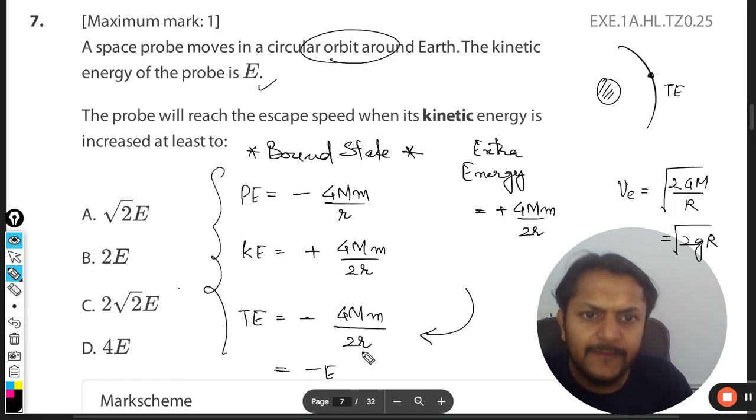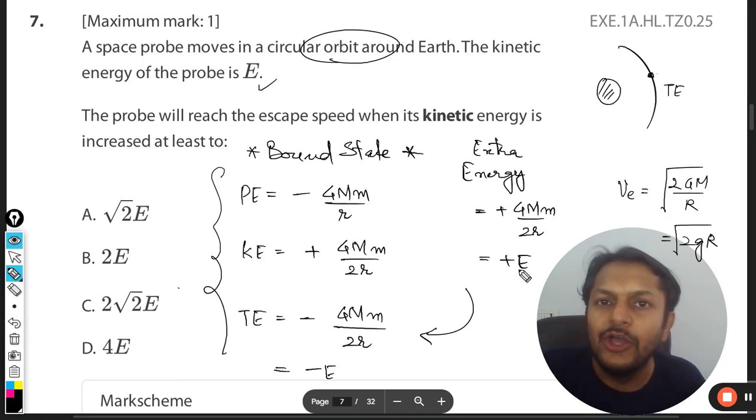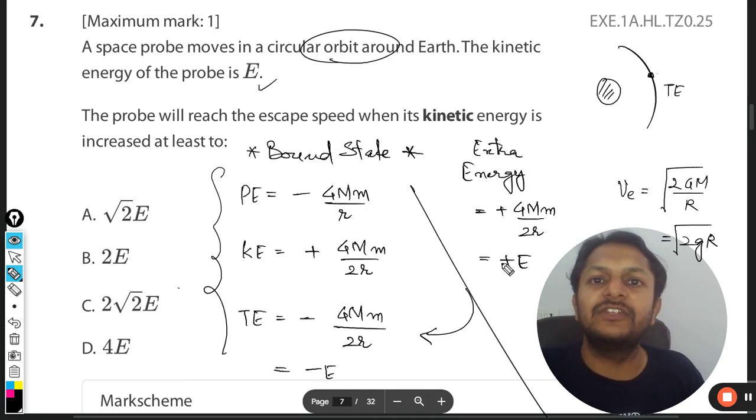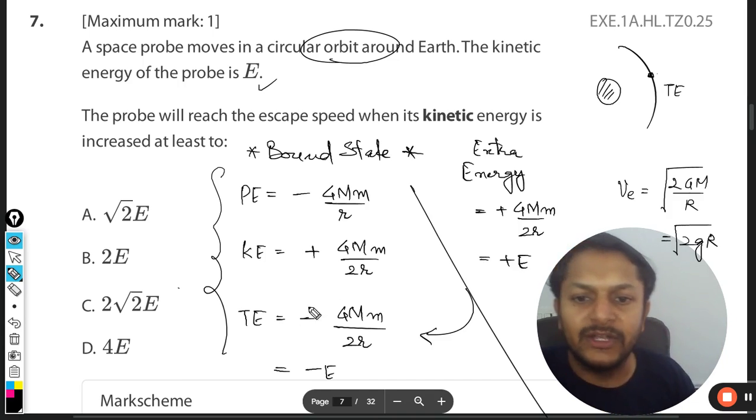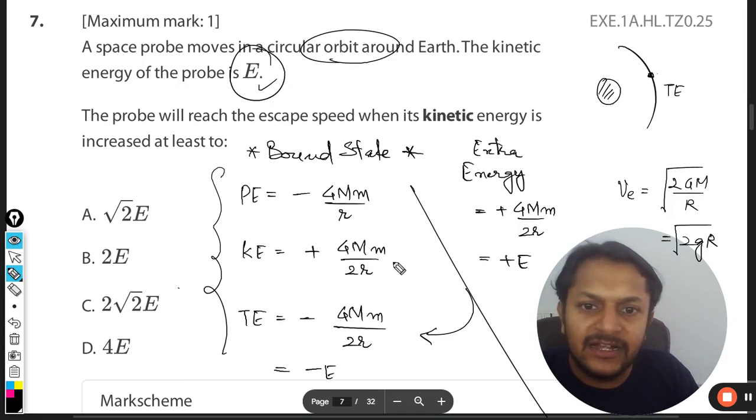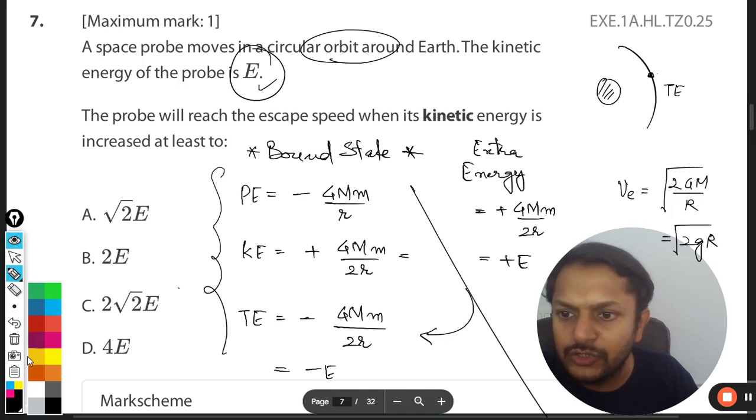Negative E, so you are giving positive E, so the total energy becomes zero. And that is the condition for the escape speed. Clear? So from this discussion, what we have learned? We learned that for escape speed, E amount of energy must be given back to it. Now the magnitude of total energy is equal to the magnitude of kinetic energy. So the question says that kinetic energy is equal to E.